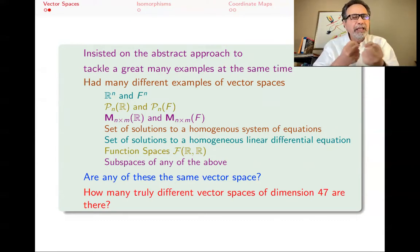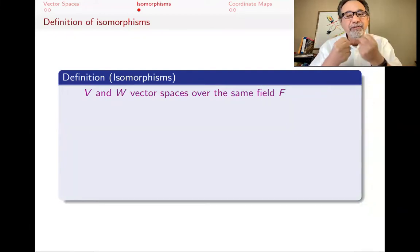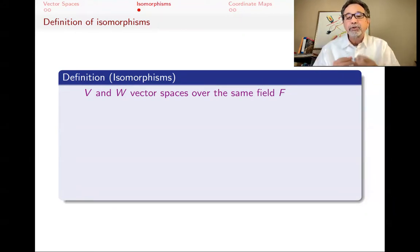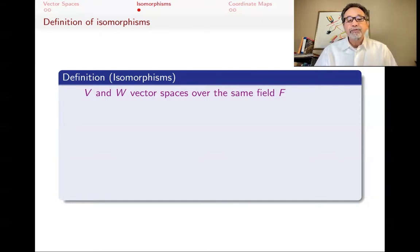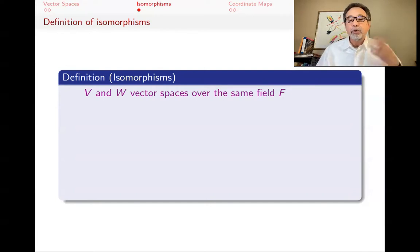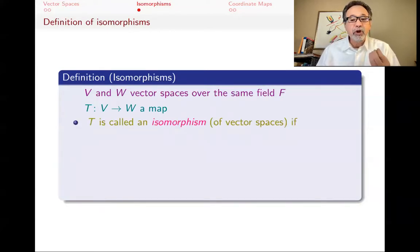To answer this, we have to decide what we mean by 'same,' and this is the concept of isomorphisms. Two vector spaces, if you think of them as the same, we call them isomorphic, and we have an isomorphism that acts like a translation from one to the other. You have two different vector spaces over the same field F — the scalars have to be the same for V and W if you want to call them the same. Then we have a translation map T, a function from V to W, and we call that an isomorphism.